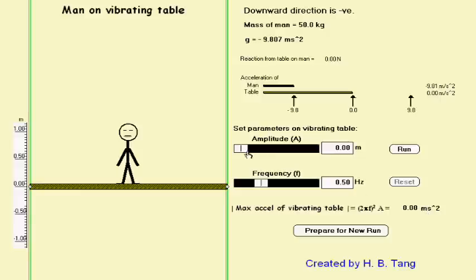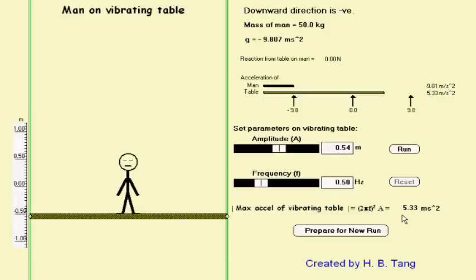Let us adjust the amplitude to be 0.54 meters so that the maximum acceleration of the table is 5.33 meters per second squared. And let's run it and see what will happen to the man.